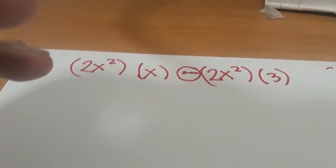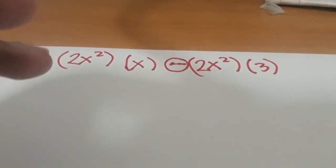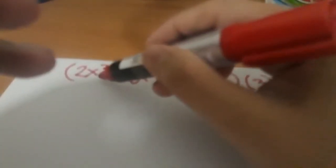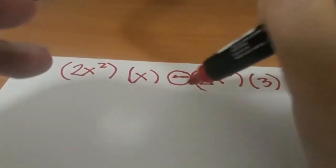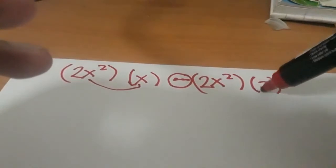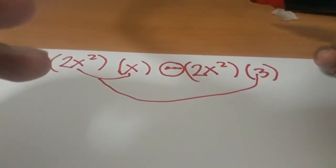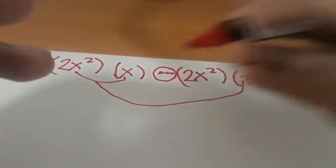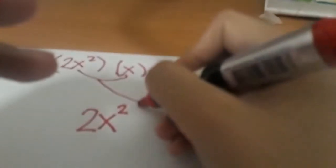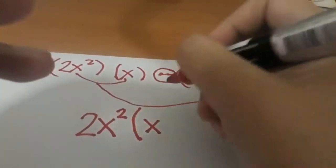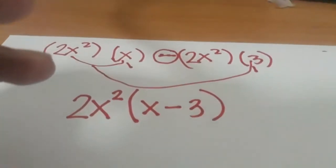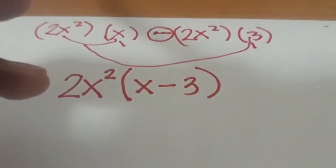So there we have it. Now what is the distributive property? That would mean that if we distribute this to this and this to this, we will still get the same answer. So now let's write the final factor. So that is 2x² times (x - 3). And there, that's our final answer.